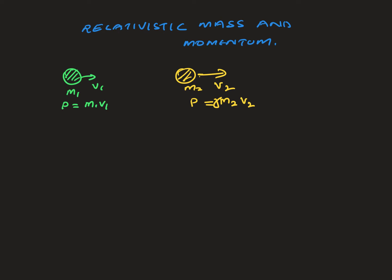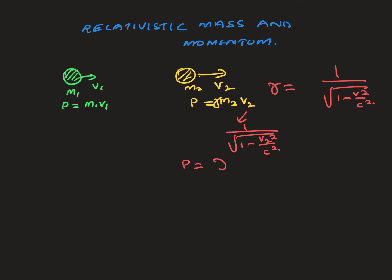What is gamma? Gamma is equal to 1 over the square root of 1 minus v squared over c squared. In this case, gamma uses v2 squared over c squared. So we can write p equals gamma mv — that's the generalized equation for relativistic momentum.